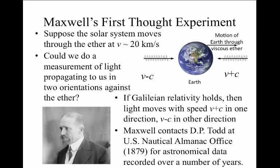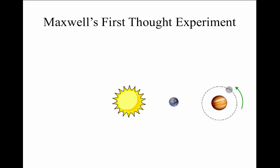Maxwell contacted David Todd at the U.S. Almanac office from the Navy for astronomical data recorded over a number of years. The data that Maxwell sought concerned the orbit of Jupiter's moon Io recorded over a number of years.